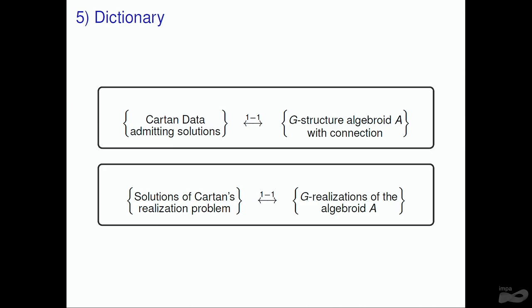One of the things I'm going to do now in this part of the talk is address something that has not been shown, which was discussed in the questions. We have not shown that G-structure algebraids with connections give Cartan data which admits a solution. It gives you the Cartan data, but we don't know yet if it admits solutions. This is one of the things I'm going to show in this part of the talk.